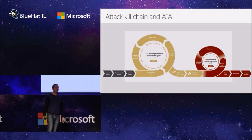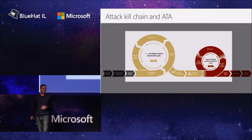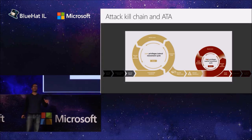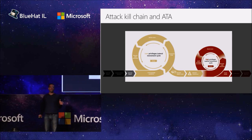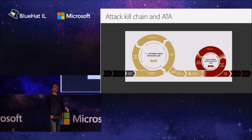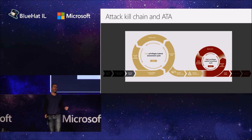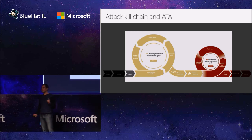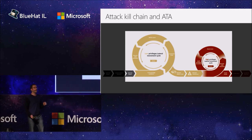And this is exactly what we are trying to stop with Microsoft ATA — looking at this kill chain and finding as many links as possible within it. Remember, we only need to be successful once to foil the attacker's whole kill chain.